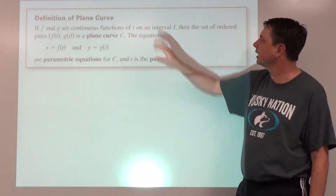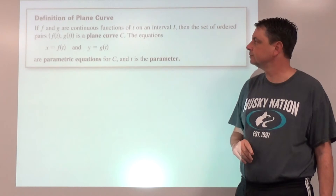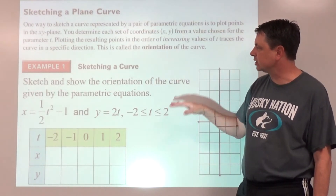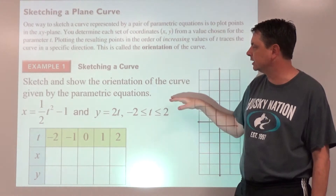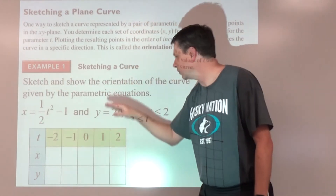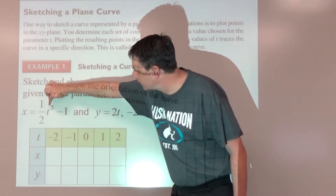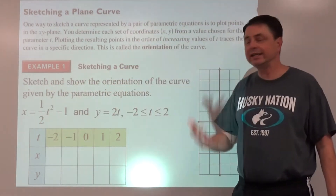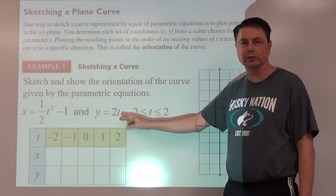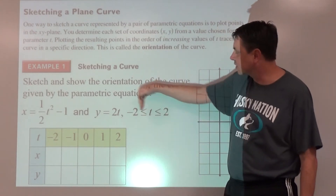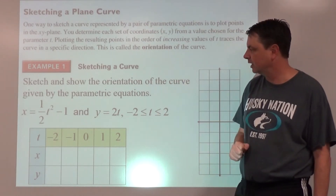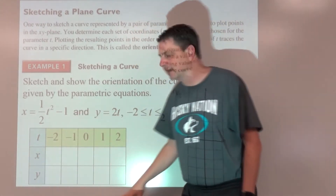Example one: sketching a curve given in parametric equations. We define x and y, both in terms of t. T is our parameter, and the interval for t goes between negative 2 and positive 2. We can set up a table of values with columns for t, x, and y.